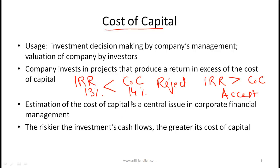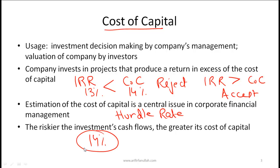The cost of capital is also referred to as the hurdle rate, because it is the hurdle level that must be cleared for a project to be considered. As a general point, the riskier a given investment's cash flows, the greater its cost of capital. If a company's cost of capital is 14% for an average project, a project with more risk than average will have a cost of capital greater than 14%, while a project with less risk will use a rate less than 14%.